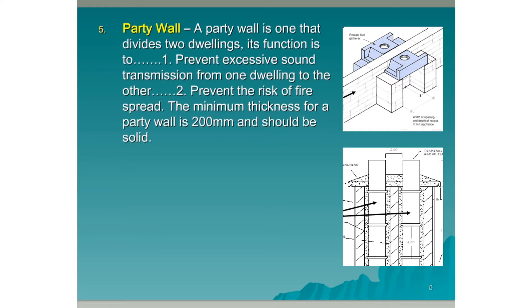Party wall: A party wall is one that divides two dwellings. Its function is to prevent excessive sound transmission from one dwelling to another and to prevent the risk of fire spread. The minimum thickness of a party wall is 200 millimeters and it should be solid.